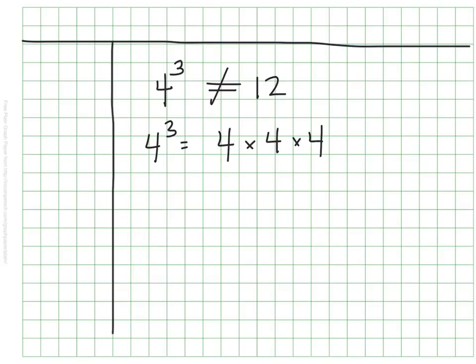I'll multiply these in pieces to make it a little easier. I know that 4 times 4 is 16, and then I need to multiply that by my 3rd 4, my last 4. 4 to the 3rd power is 64, not 12. Very different answer.